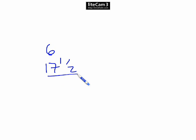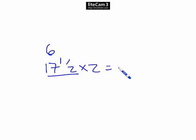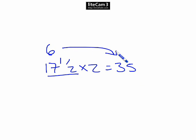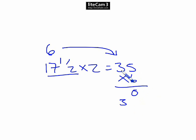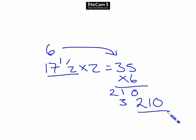The 17 and a half miles is one way, so we've got to times that by 2 because they're going there and back. 17 and a half times 2 is 35. They've got 6 sessions of 35 miles, so 6 times 35 gives us 210. Our answer is 210 miles.